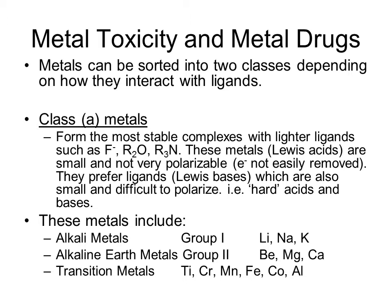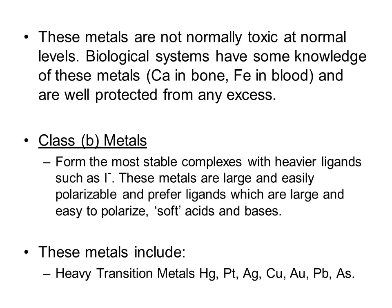Metals in Class A include alkaline metals, which are Group 1 metals, alkaline earth metals, Group 2 metals, and your transition metals — so your S and D block metals. These metals are not normally toxic at normal levels. Biological systems have some knowledge of these metals, for example calcium in bones or iron in blood, and they are well protected from any excess. Your body knows how to regulate these metals.